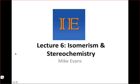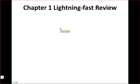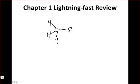Before we get there, I just wanted to hit Chapter 1 really quick in a lightning-fast review. What we learned in Chapter 1 is that chemists use Lewis structures to represent the structure of organic molecules in very quick and shorthand ways. Bonds are represented as lines between atoms — each line corresponds to two electrons — and we can see double, triple, or single bonds in organic molecules. We represent lone pairs as two dots on atoms.